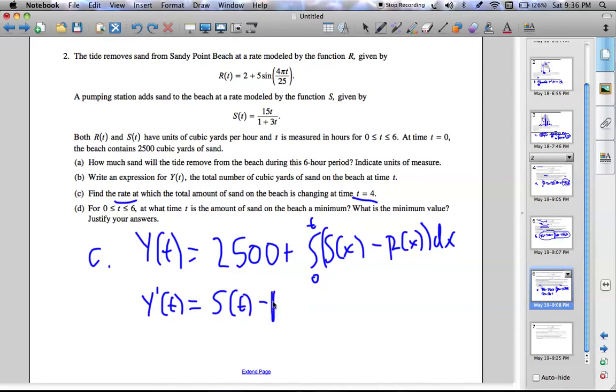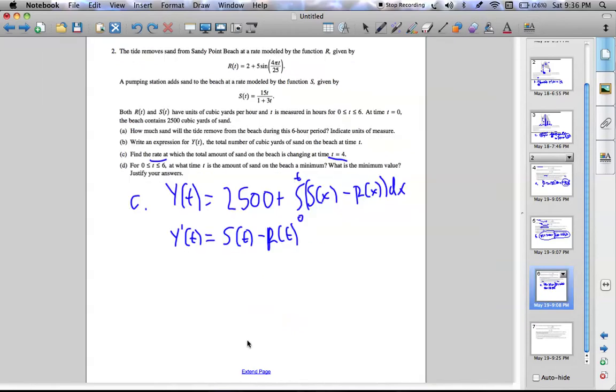we get this. So this is equal to 15T over 1 plus 3T minus 2 plus 5 sine 4 pi T over 25.